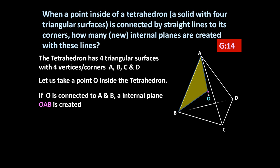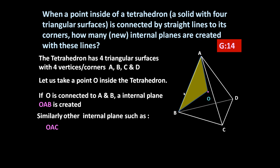Similarly, other internal planes can be created: OAC, OAD, then OBC, OBD, and OCD. So the planes are: OAB, OAC, OAD, OBC, OBD, and OCD. No other plane is possible when we connect the interior point to the four vertices of the tetrahedron.